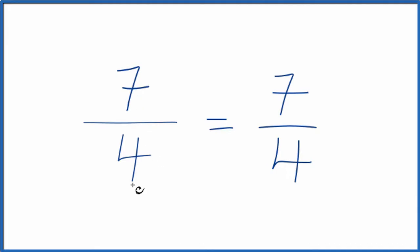We could write 7/4 as a mixed number. Right now it's an improper fraction because the numerator is larger than the denominator. Let's do that. So 4 goes into 7 one time with 3 left over, bring the denominator across, and 7/4, that improper fraction, does equal the mixed number 1 and 3/4.